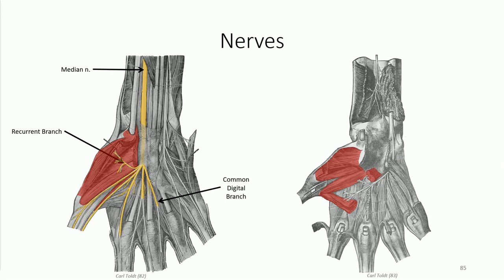From here they provide motor branches to the two lumbrical muscles before splitting into the proper digital branches to project up either side of digits 1, 2, 3, and the lateral half of 4.